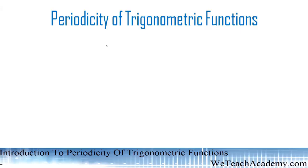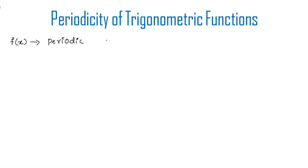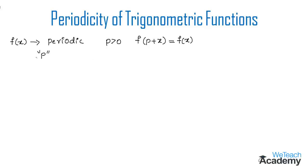First, let me define a periodic function. A function f is said to be periodic if there exists a real number p greater than 0 such that f(p + x) is equal to f(x). The least value of p is called the period of the function.